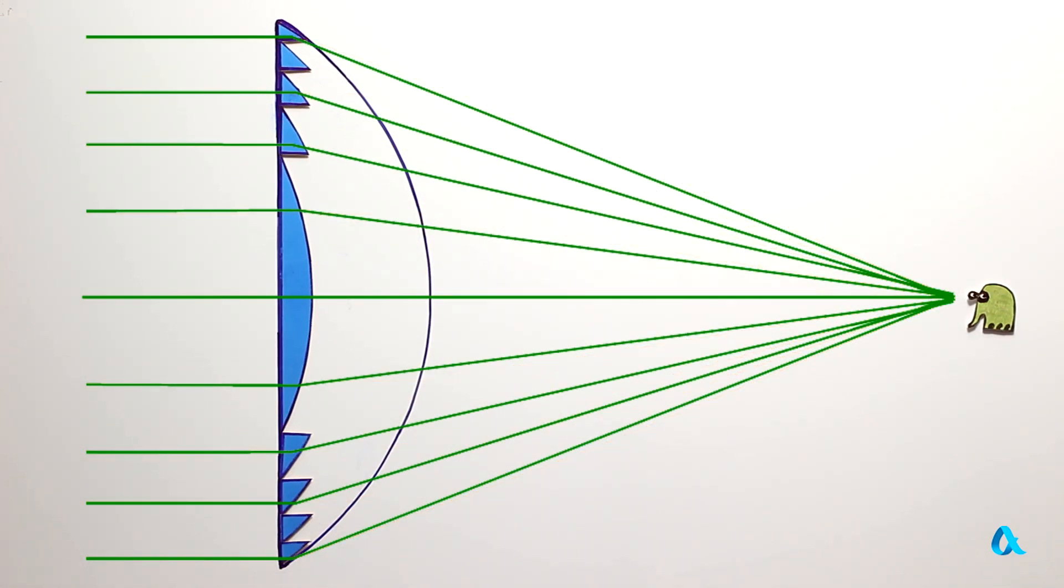What we get is Fresnel lens, which has become much thinner, but it still does focalize parallel rays.